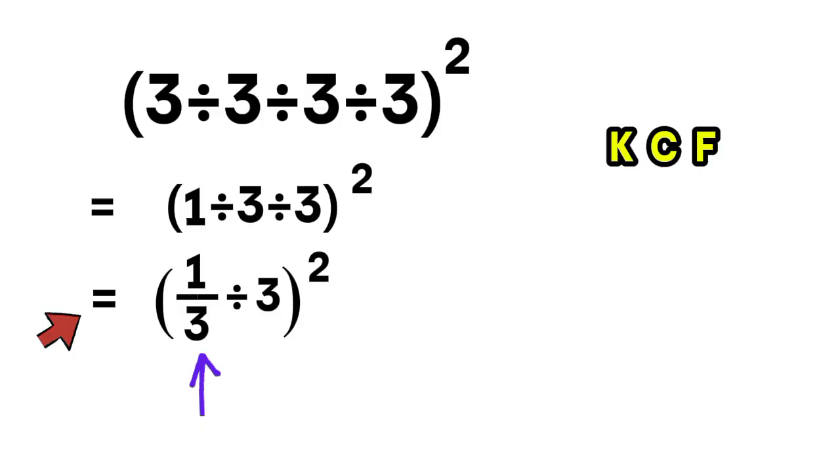We keep the fraction as it is, so we keep 1 third. We change the division sign into multiplication. And we flip the number we're dividing by. The 3 becomes 1 third. So 1 third divided by 3 becomes 1 third times 1 third, and that equals 1 ninth.